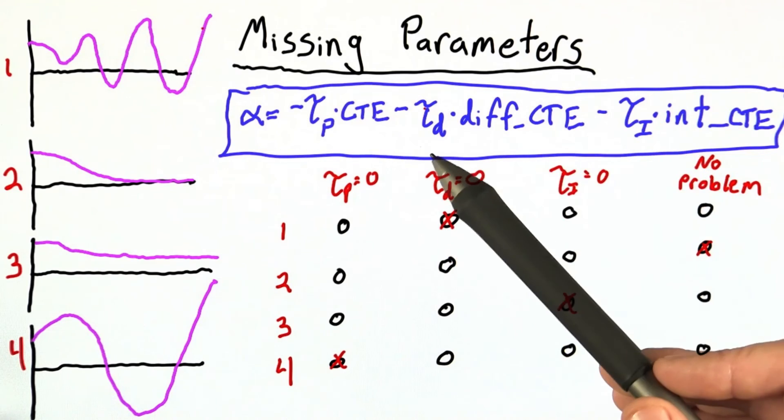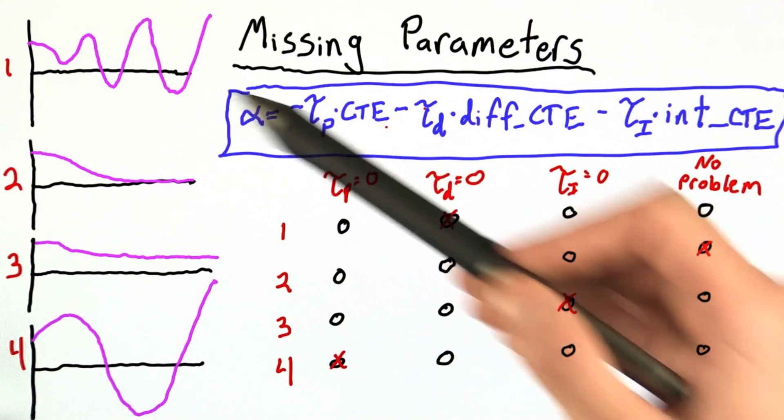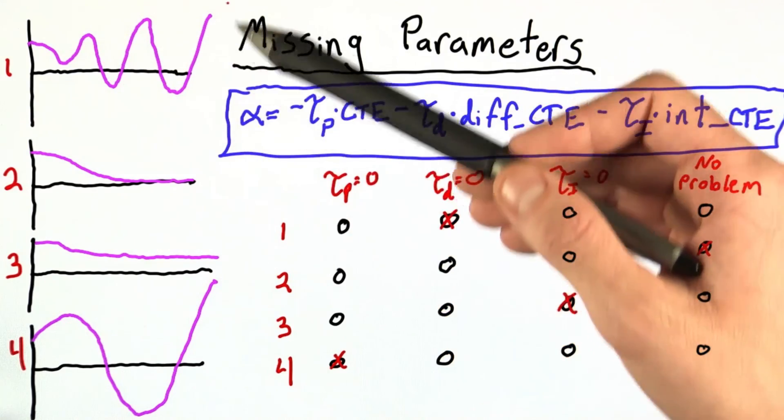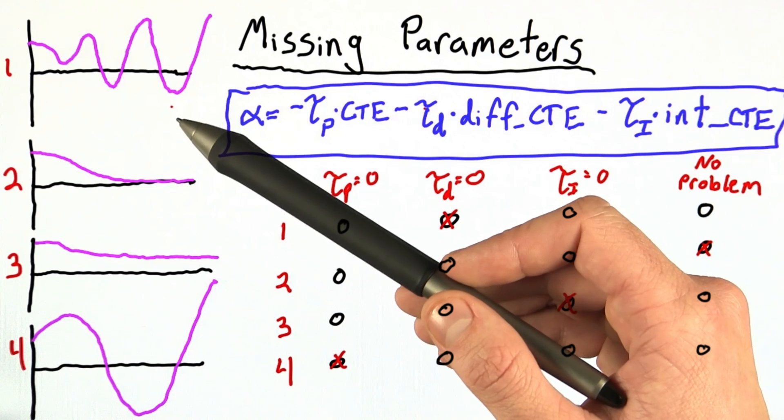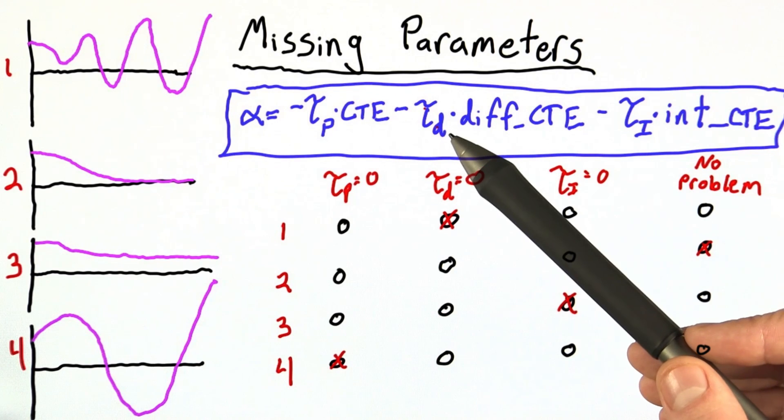then we can see how if tau d is equal to 0, we would expect these sort of growing oscillations. And this behavior is characteristic of any PID controller where the differential term is too small.